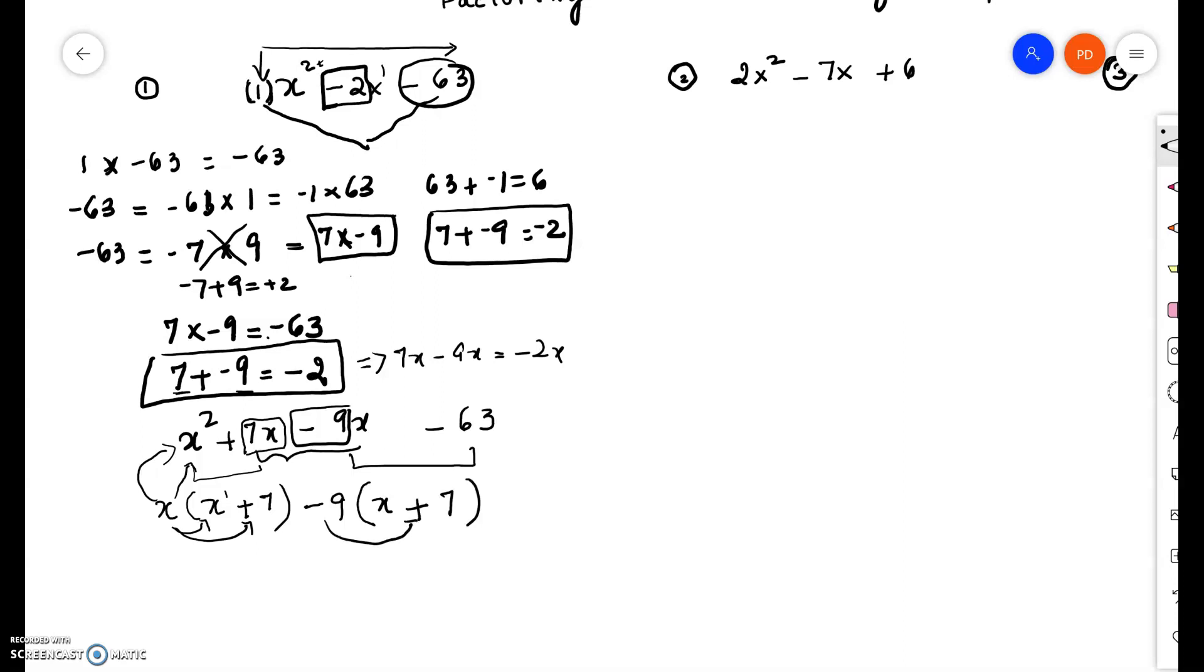Because negative 9 times positive 7 is negative 63. Now it all works out because if you look at the next step, notice that the common factor is the entire parenthesis, which is x plus 7.